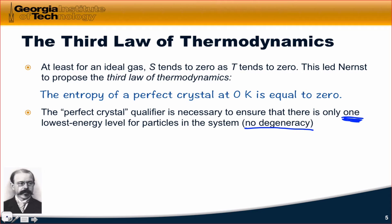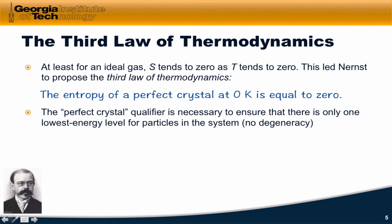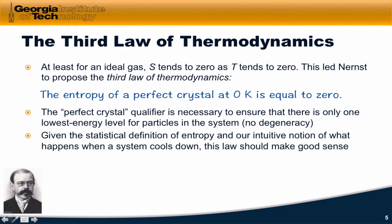We've seen degeneracy, for example, in the atomic orbitals. The 2p atomic orbitals — there are three of them — and so we say that this is three-fold degenerate. In a perfect crystal, there can be no degeneracy, because if the probability of being in each of three orbitals is 0.33, entropy is non-zero according to Boltzmann's definition. There must be only one lowest energy level in a perfect crystal. Given the statistical definition of entropy and our intuitive notion of particles slowing down and organizing themselves as the system cools down, this law should make pretty good sense.